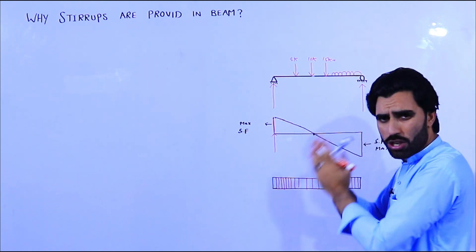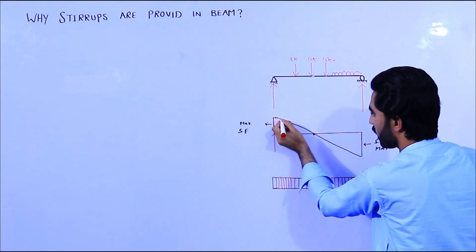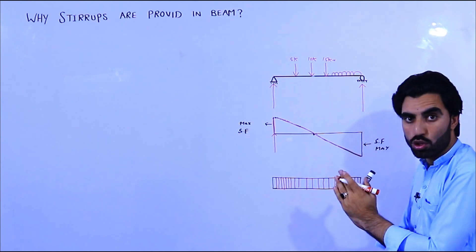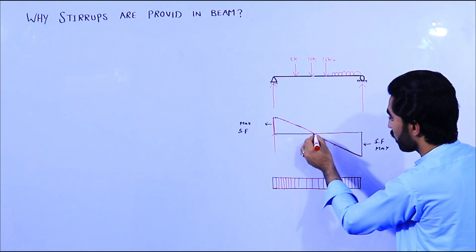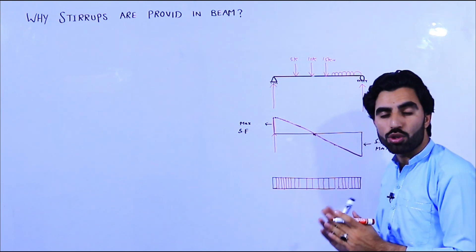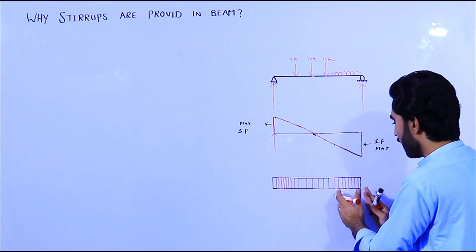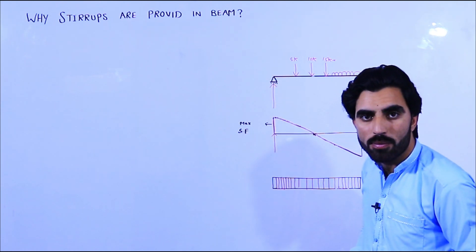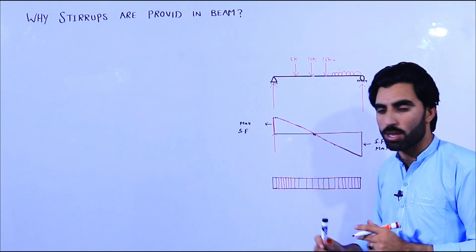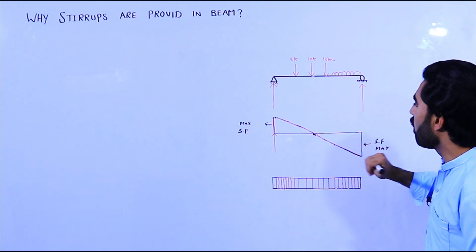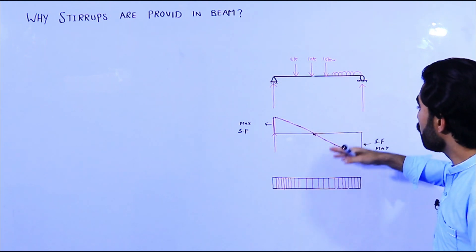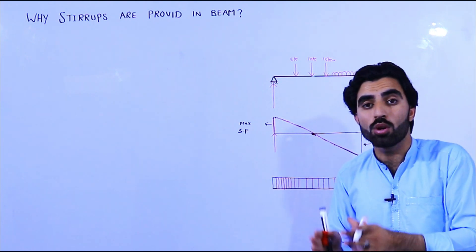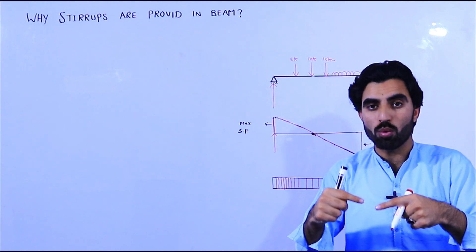When the shear force is coming low, you can see it goes from low back to maximum near the support again. So the stirrups should be placed closely - spacing should be minimum near supports. But where shear force is minimum, stirrups should be placed with more space. Near the support they should be spaced closely. This is the main reason to provide stirrups in a beam - with more space at mid and less space at ends. This is the shear force diagram, and therefore we provide stirrups. At the midpoint shear force is minimum but bending moment is maximum. Bending moment is a force which wants to make a structure bend.